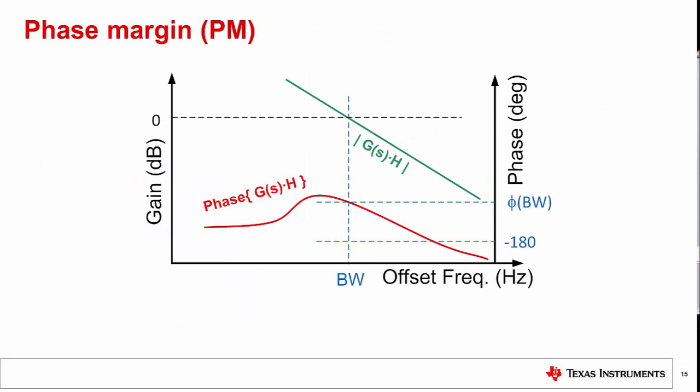Phase margin relates to the stability of the PLL. Pictured here is the Bode plot of the open loop transfer function of the PLL. The phase margin tells us how far away from the minus 180 degree phase we are where the gain is 0 dB. It can also be calculated as 180 degrees plus the phase of the open loop transfer function at the loop bandwidth frequency offset. Keep in mind the phase of the open loop transfer function is a negative number in the range of minus 90 to minus 180 degrees.